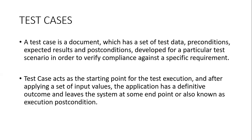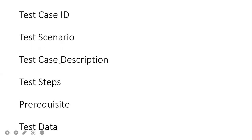A test case consists of test data, preconditions, expected results, and post conditions. The test case acts as a starting point for test execution. After applying the set of inputs, the application has a definitive outcome and leaves the system at an end point — that is known as execution of the post condition. Now, what are the things present in the document whenever you are creating any document for testing purposes? First is test ID, then test scenario.